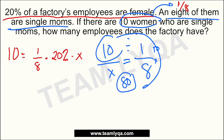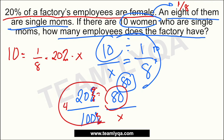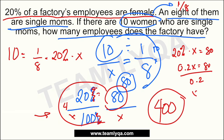Now, what is that 80? The 80 female employees represent 20% of the factory. I want to find 100% — how many total employees are there? Using ratio rotation: 80 divided by 20 is 4, times 100 gives 400. The answer is 400 employees. Or using algebra: 0.2x equals 80, divide both sides by 0.2, and the answer is still 400. Either method gives you the correct answer of 400.